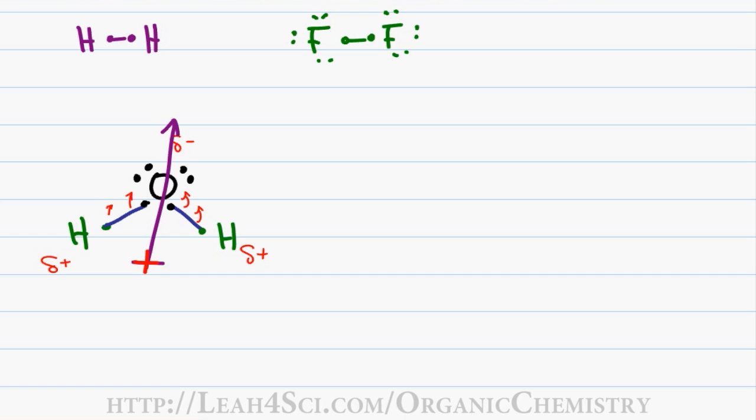The way to remember which is the negative and positive end, envision a positive on the tail of this dipole moment pointing towards the negative. So we can consider the bottom as the positive pole and the top as the negative pole and having a positive and a negative gives us two poles or a dipole. And the type of covalent bond that forms this dipole is considered a polar covalent bond.